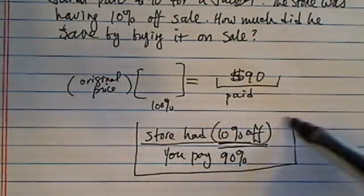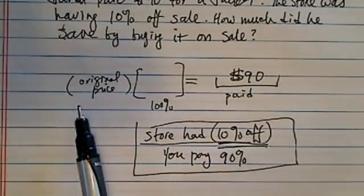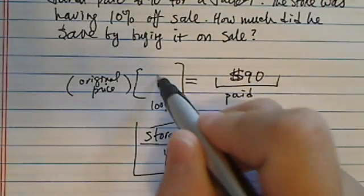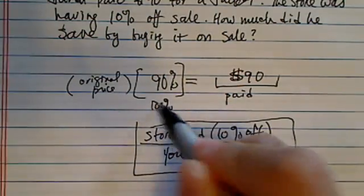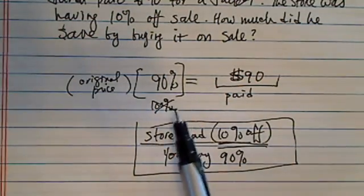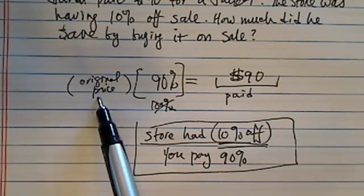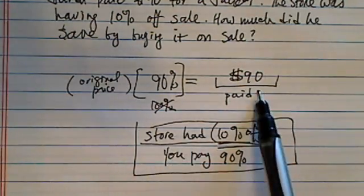So if you have this idea in your mind, then you can see our original price times 90% is what? Not 100%. That's when it's not on sale. So our original price times 90% is what he paid.